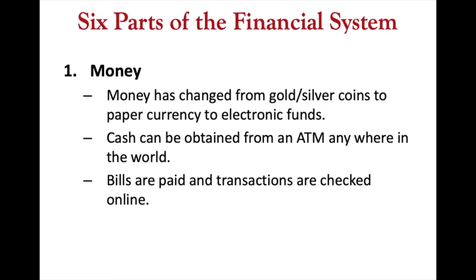When you have money, you avoid that problem. You can simply sell your motorcycle to whoever wants a motorcycle, and then with that money — adding a little bit more — you can buy the car you need from whoever has that car. That makes things a lot easier. That's the first function of money: means of exchange.